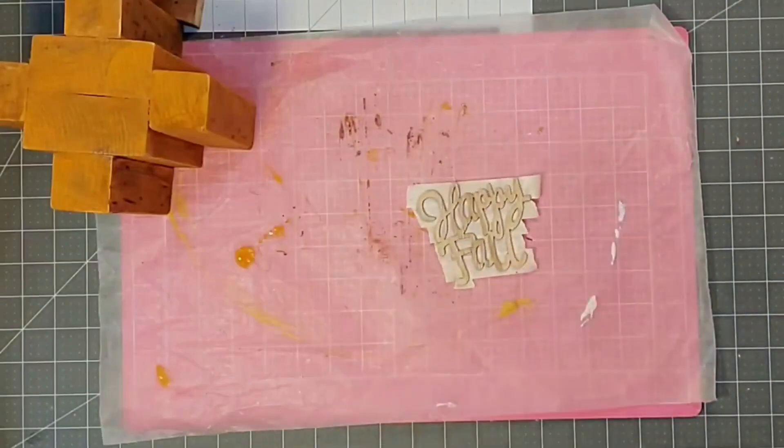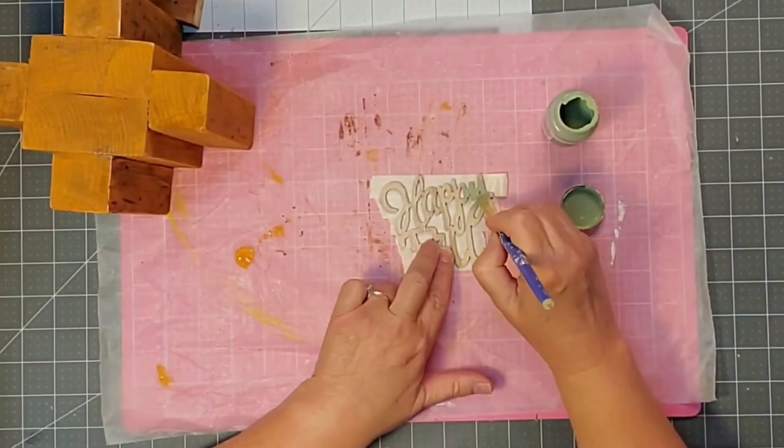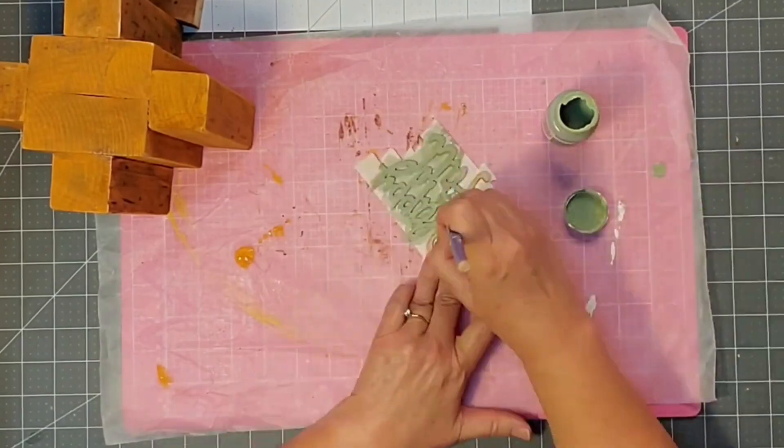I put some tape on the back of my little sign that says Happy Fall, and then I'm coming in with the moss chalk paint, and giving it a nice coat.